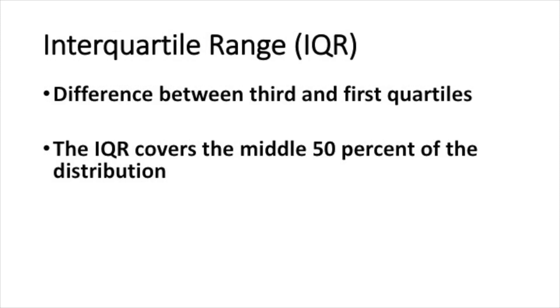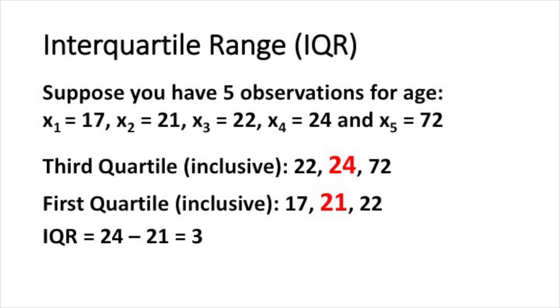The interquartile range is defined as the difference between the third and first quartiles, meaning it covers the middle 50% of the distribution. For example, suppose you have five observations for age: 17, 21, 22, 24, and 72. The third quartile, if you include the median in the calculation, is 24. The first quartile is 21. This means the difference between the third quartile (24) and the first quartile (21) is 3, so you have an interquartile range of three years of age.